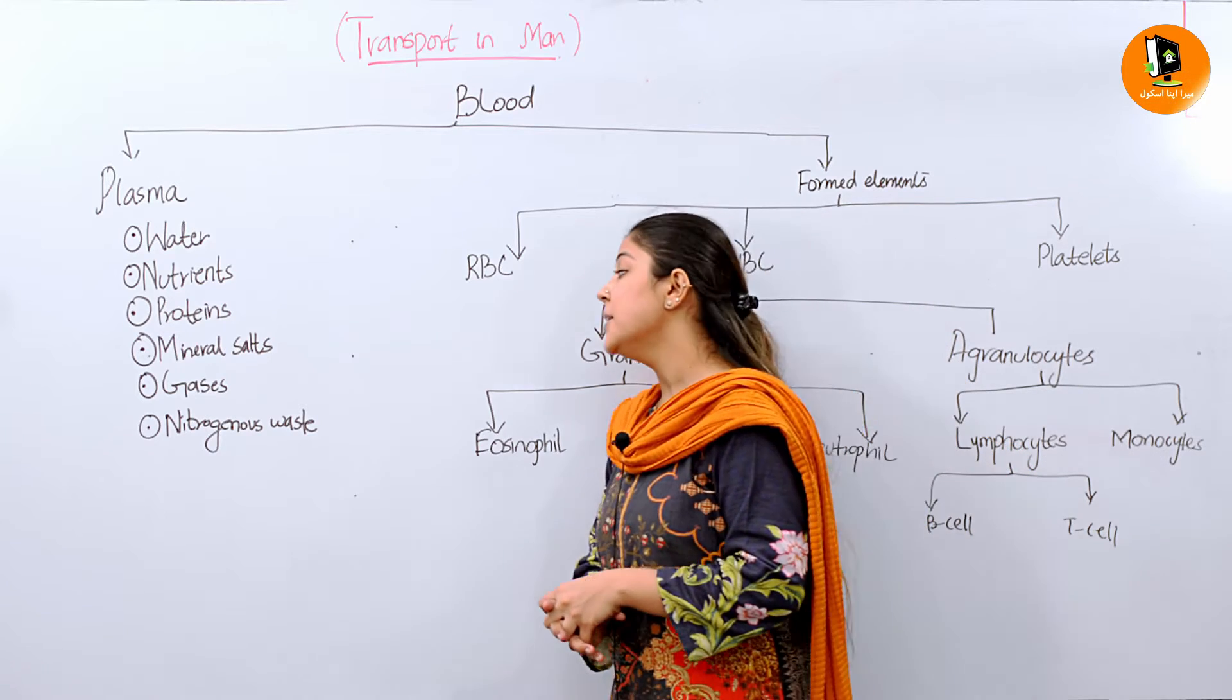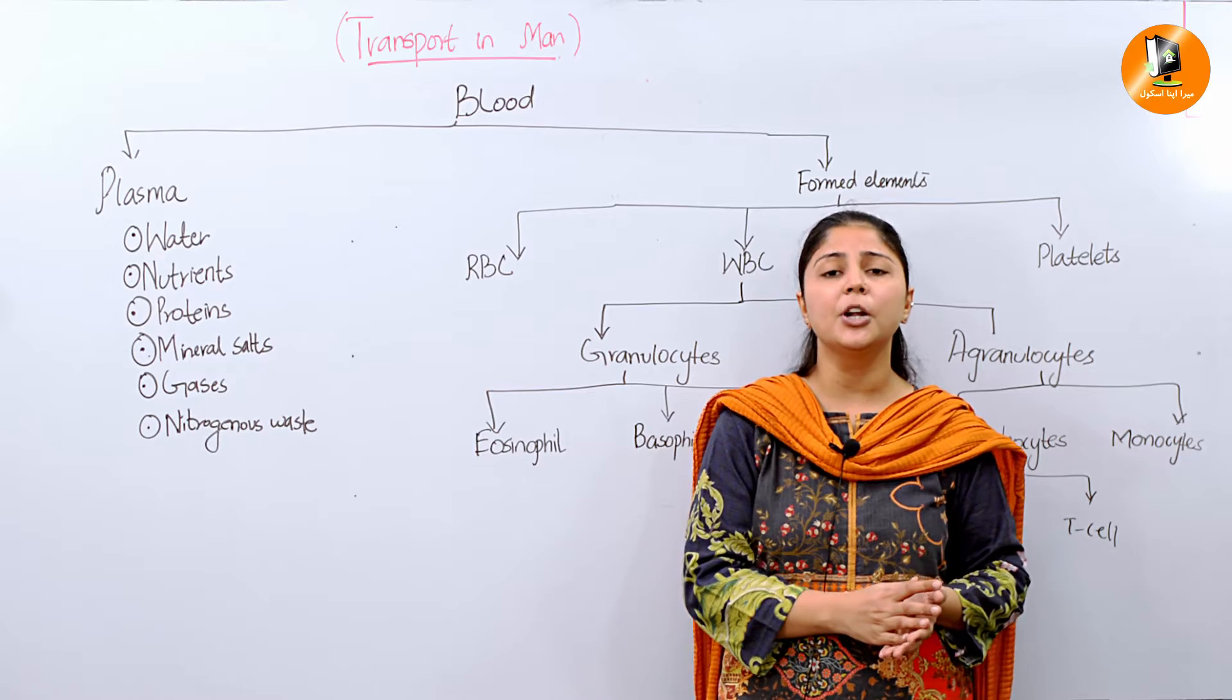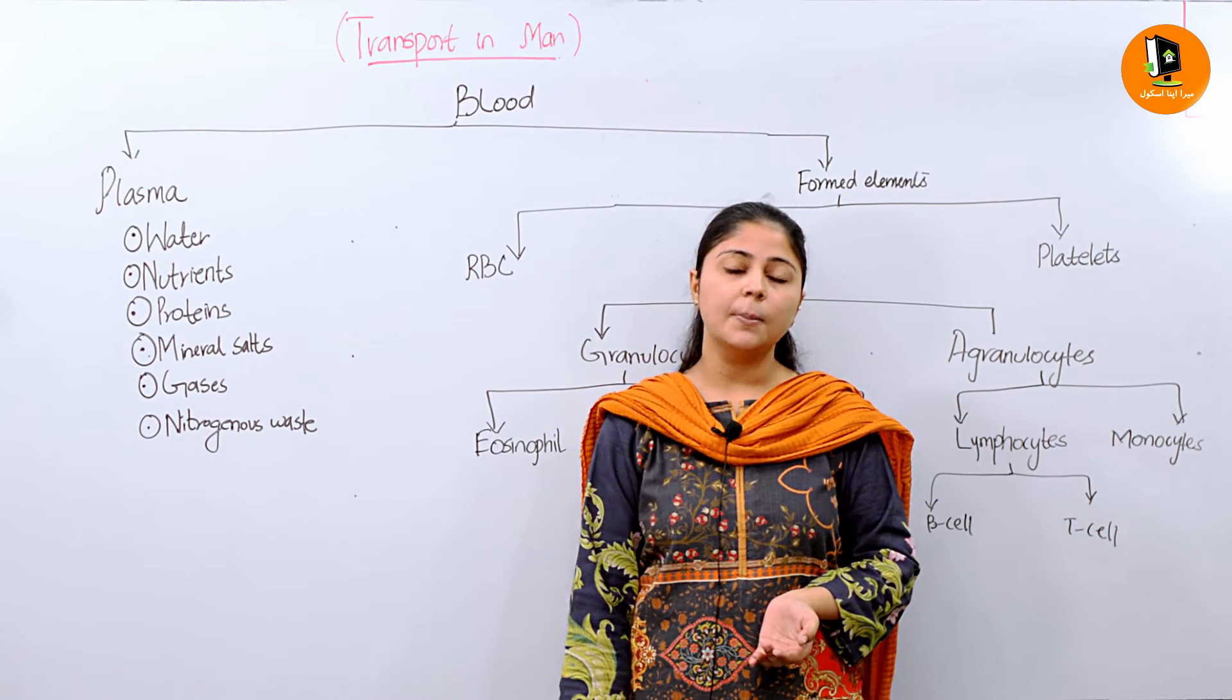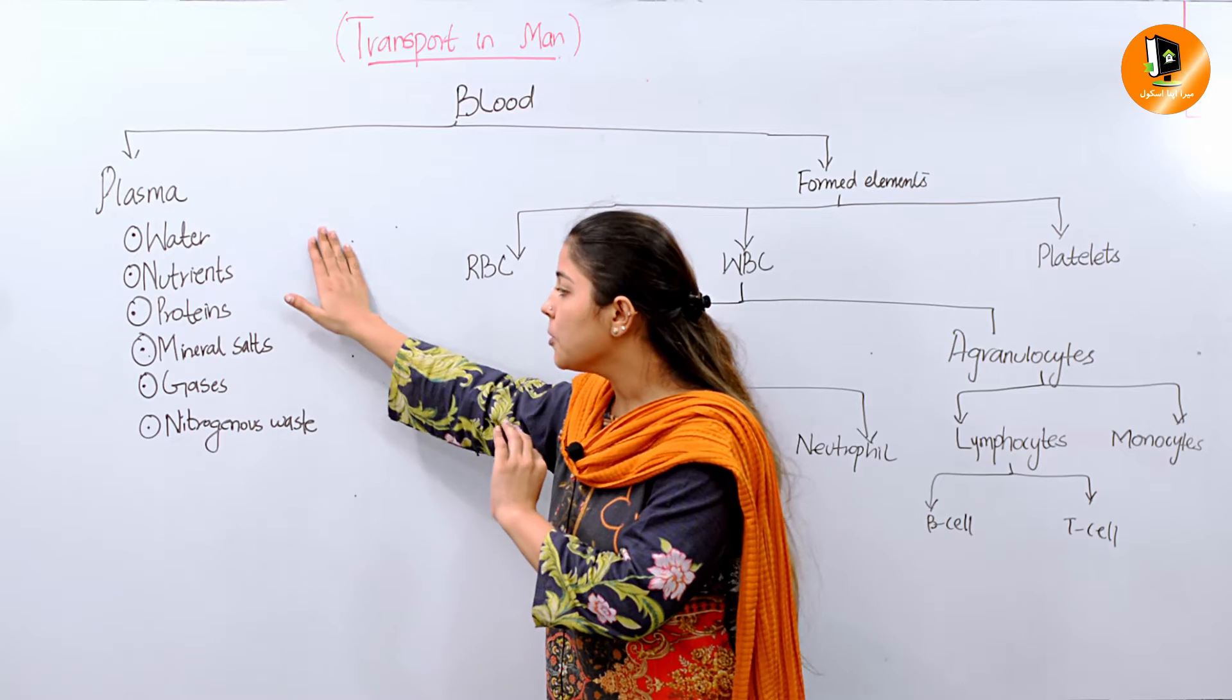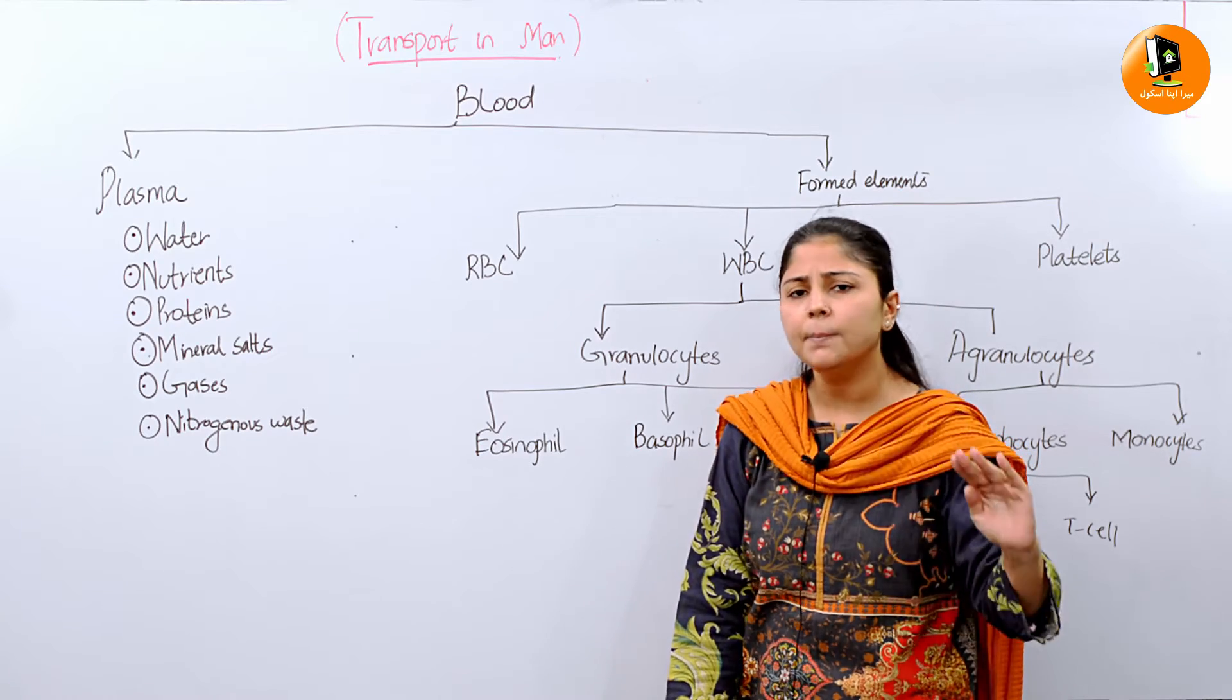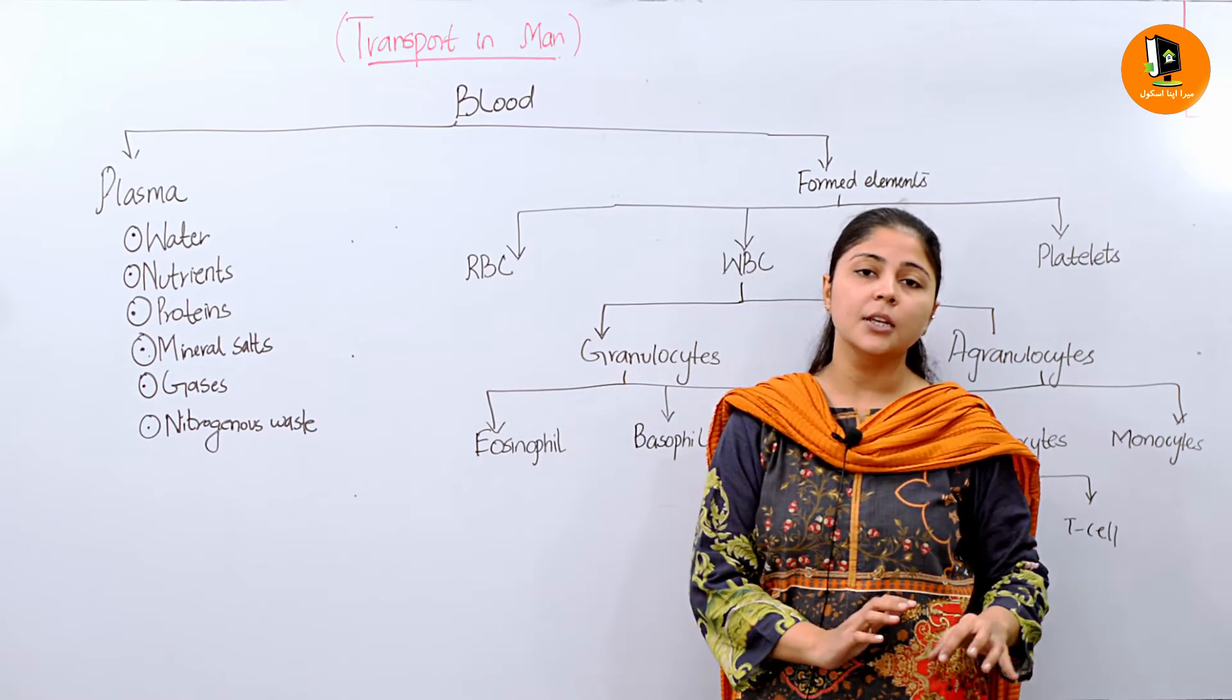The next one is nitrogenous waste. For example, the protein byproduct is urea. These are the smaller compositions of the plasma. Let's summarize again: plasma is 55 to 60 percent present in our blood. Water, which is the important component of plasma, is 90 percent. The remaining 10 percent includes other elements like nutrients, proteins, minerals, salts, gases, and nitrogenous waste.